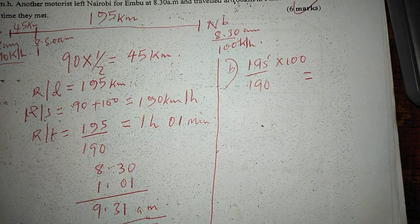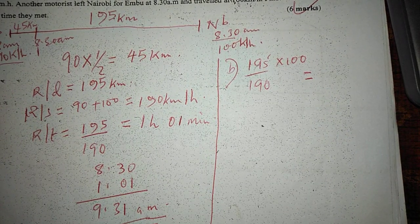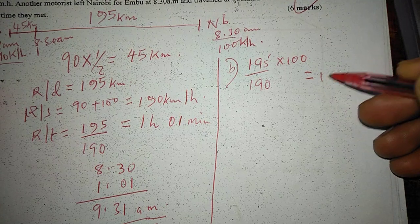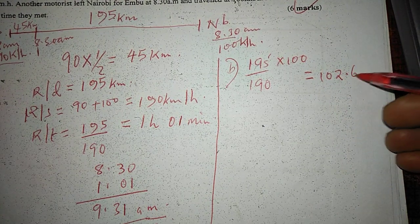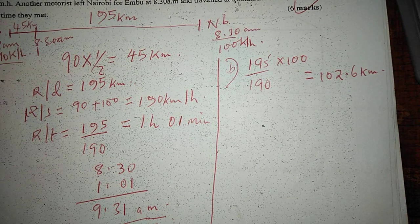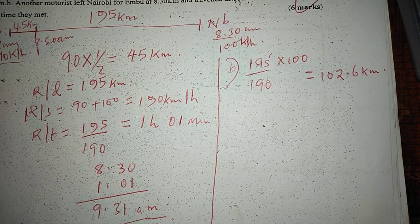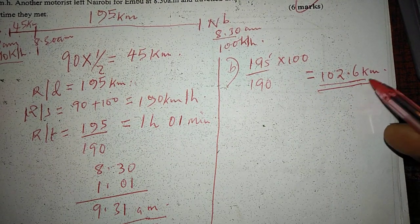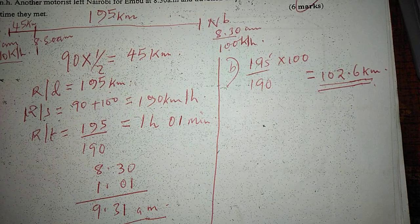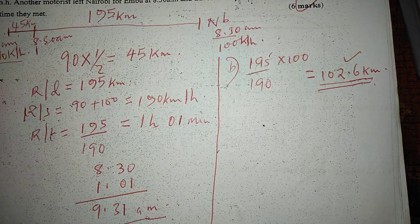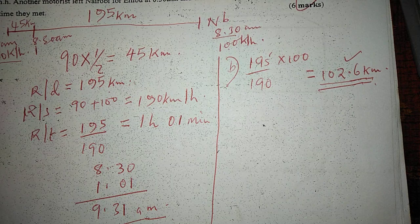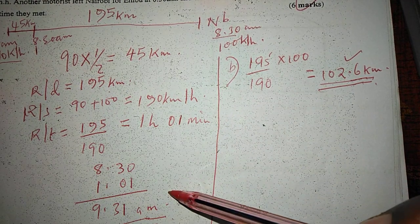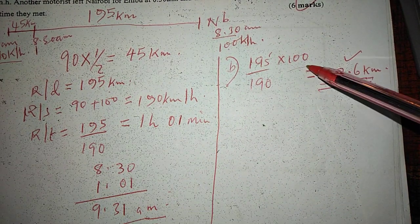They are meeting after a time of 195 divided by 190, and the motorist from Nairobi is moving at 100 kilometers per hour. So this means they are going to meet after a distance of 102.6 kilometers from Nairobi. Since the motorist from Nairobi has taken the same time to meet the one from Mbu and is using a speed of 100 kilometers per hour.